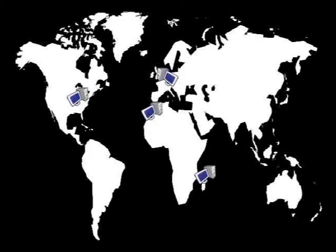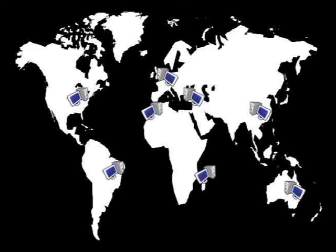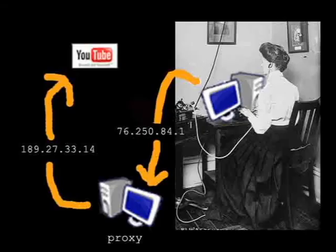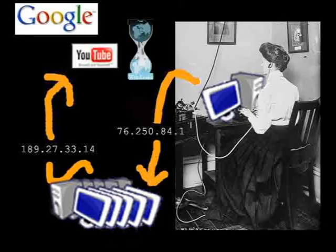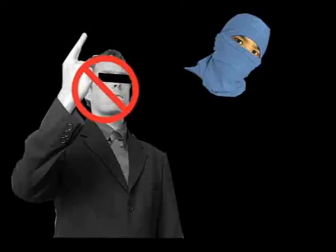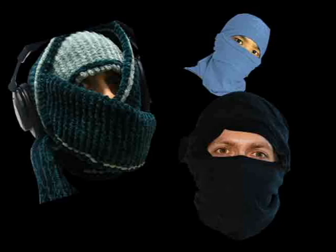Tor is an application that bounces your communications around a worldwide network of computers that also have Tor. It's like a proxy, but puts even more computers between you and the website you want to access, so it's harder for anyone to figure out who you are. To get Tor, visit torproject.org and download the required software, then follow the instructions to set it up. Even if you don't think you need this much anonymity, you could still use Tor to relay traffic for others in the Tor network who do. To find out more about the many uses of Tor, visit torproject.org/torusers.